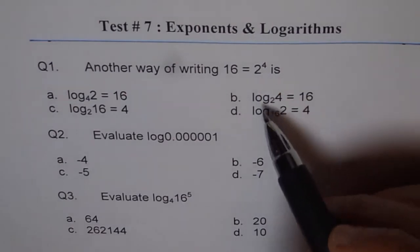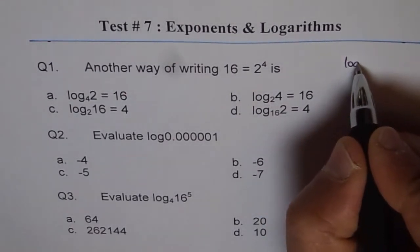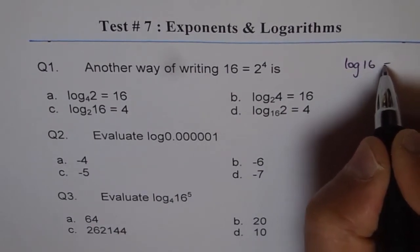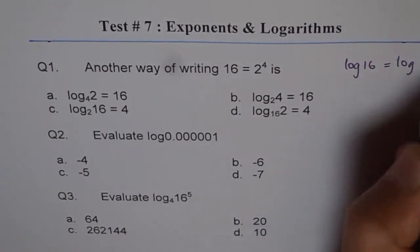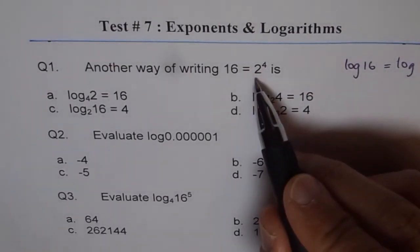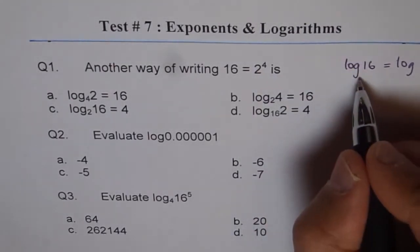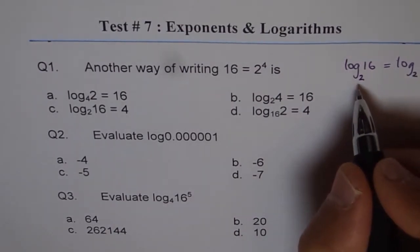To write from exponential to log form, we should take log on both sides. So we get log of 16 equals log of 2 to the power of 4. When we take log on both sides, we should keep the same base. That is important. Base of exponential function here is 2, and therefore the base should be 2.